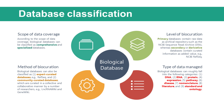Specialized databases contain specific types of data or data from specific organisms. For example, WormBase is for nematode biology and genomics, and Rice Wiki is for community curation of rice genes. According to the level of data curation, biological databases can fall into primary and secondary or derivative databases. Primary databases contain raw data as archival repositories, such as the NCBI Sequence Read Archive, whereas secondary or derivative databases contain curated information as added value, such as NCBI RefSeq. As a consequence of the explosive growth of data, curation increasingly requires collective intelligence for collaborative data integration and annotation.